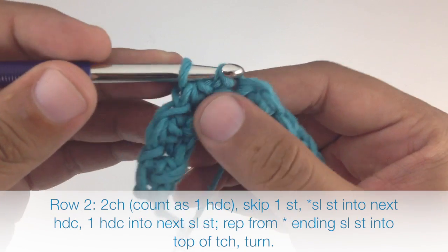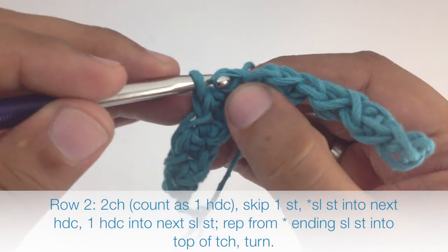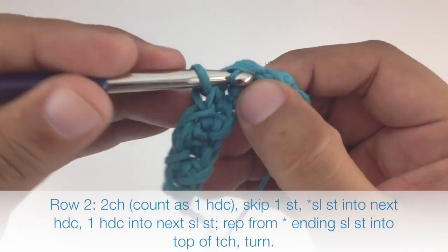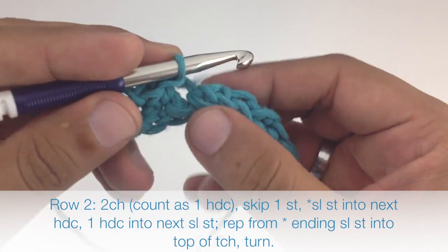Repeat row 2 until you've reached your desired length. And that's how you crochet the crunch stitch.